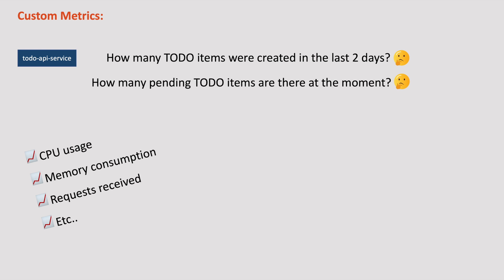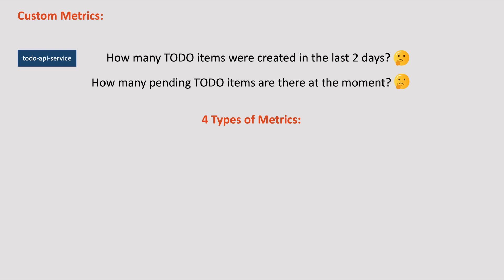For example, with these custom metrics, we can check how many to-do items are getting created daily or how frequently users are completing their to-do items. So to generate these custom metrics, Prometheus supports four types of metrics: Counter, Gauge, Histogram, and Summary. Let us see what each type is in detail with examples, starting with Counter.